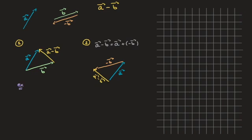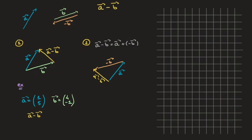Let's say vector A has components (1, 5) and vector B has components (4, -1), and we need to find A minus B. You can see right away that the horizontal component of A minus B would be 1 minus 4, which is negative three, and the vertical component would be 5 minus negative 1, which is six. So we already know that A minus B has components (-3, 6). Now let's apply each of the two methods graphically to confirm this.